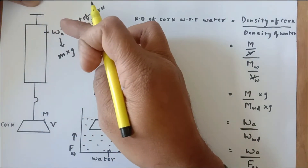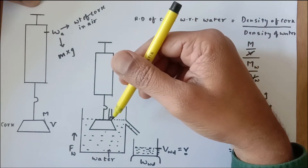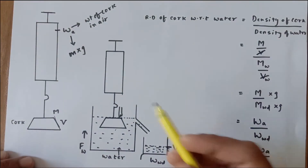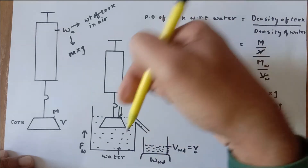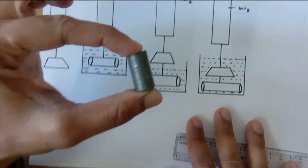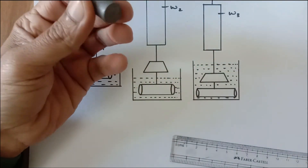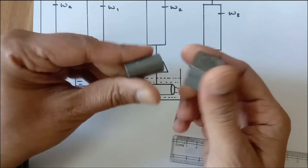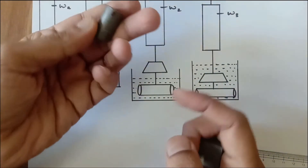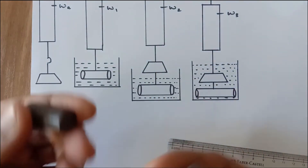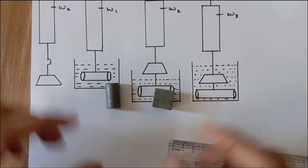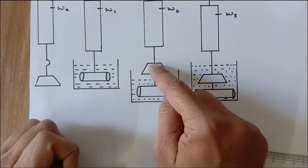Ideally, if we consider a sinker forcefully pressed inside the water and apply the formula, we should get this answer. But in practice we don't immerse the entire cork with our finger — instead we use something known as a sinker. A sinker is a cylindrical or cubical piece of metal, such as iron. The purpose of the sinker is to completely sink the piece of wood or cork inside the water. It may be of any shape, but it must be heavier than water and strong enough to pull the entire piece of wood or cork underwater.